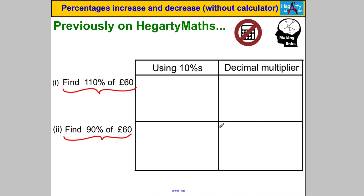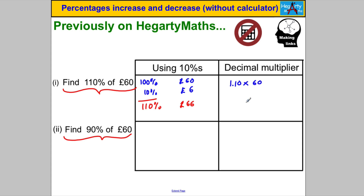To recap: to find 110% of £60, first state that 100% is your original amount, £60. Then 10% is found by dividing by 10, giving £6. Therefore 110% is £60 plus £6 equals £66. The other way is to say 110% is 1.10 as a decimal, multiply by 60: 11 × 6 = 66, so 1.1 × 60 = 66.